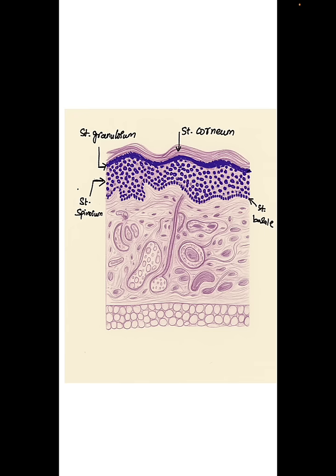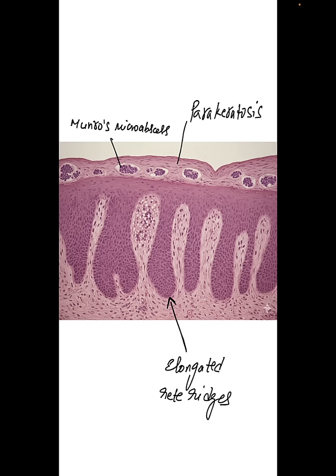This is how a normal skin would look under a microscope. The epidermis has the following layers: stratum corneum, stratum granulosum, stratum spinosum, and stratum basale. In palms and toes, there will be an extra layer called stratum lucidum between stratum corneum and granulosum.